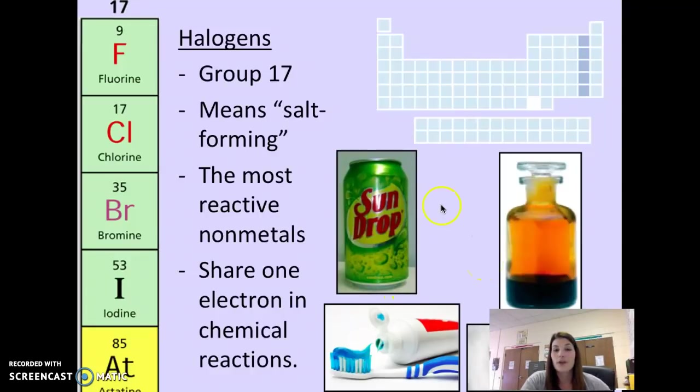And then the picture of Sundrop here, we actually have bromine, Br number 35, is found in a lot of citrus sodas like Sundrop and Mountain Dew. It helps keep the citrus flavoring from separating out. But that being said, it's also really bad for you. And there's a lot of research showing that it can actually cause a lot of problems with your thyroid. So be careful drinking all those sodas. Those are the most reactive nonmetals in the halogen family.